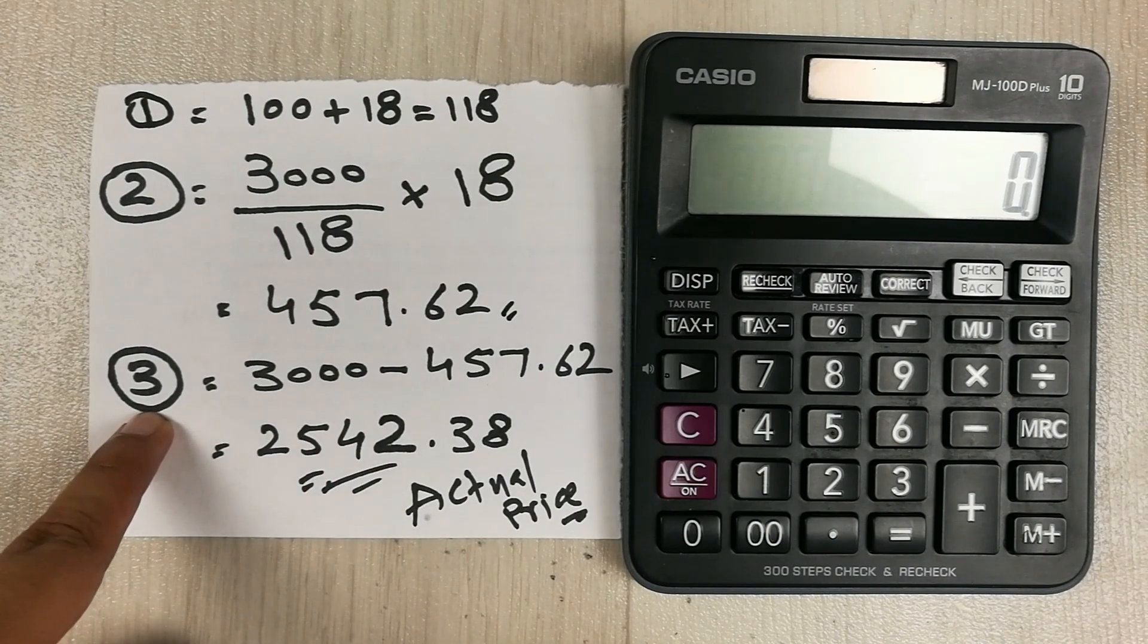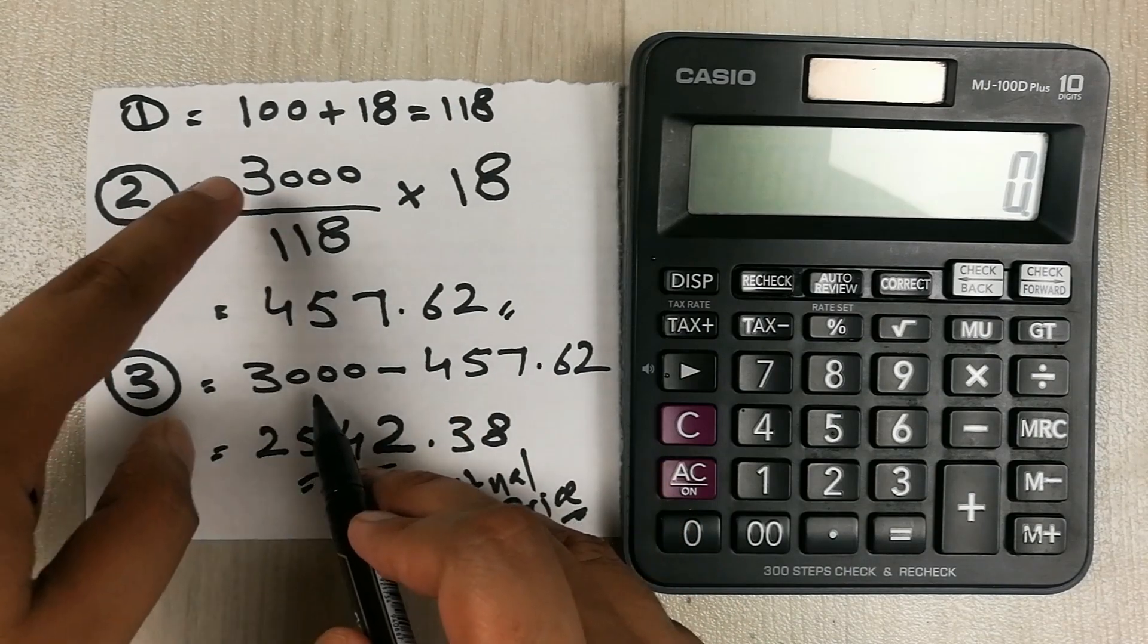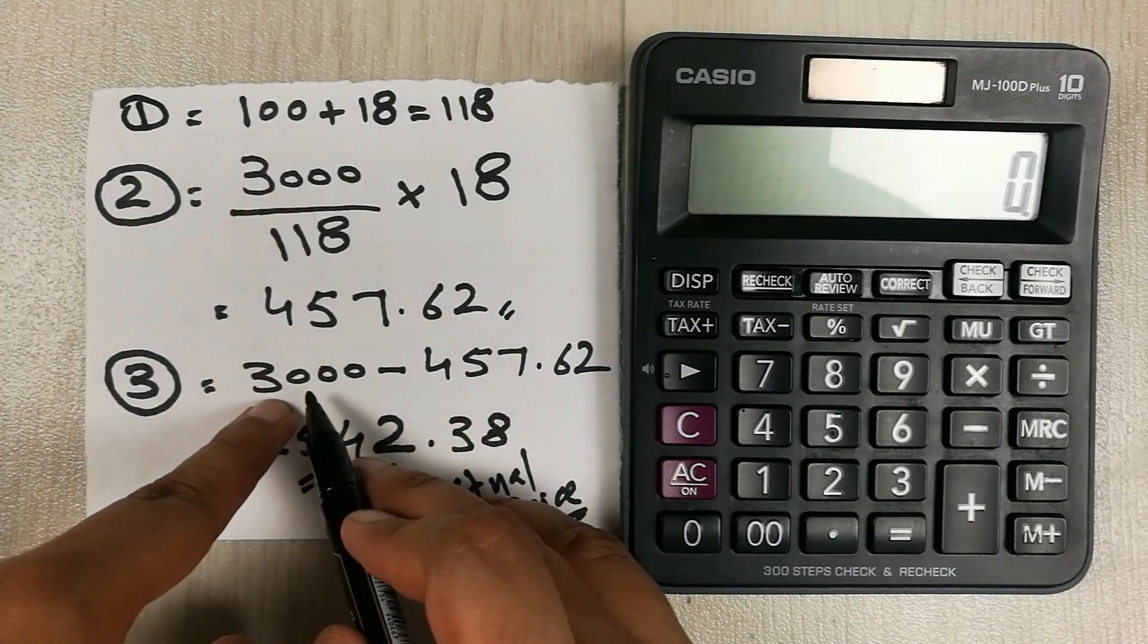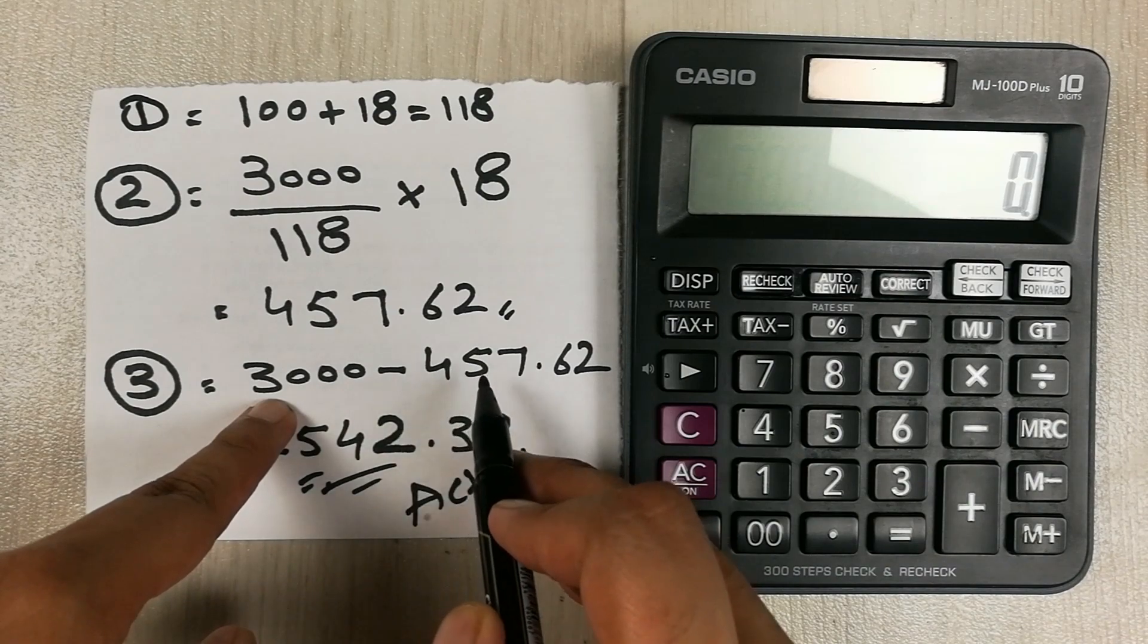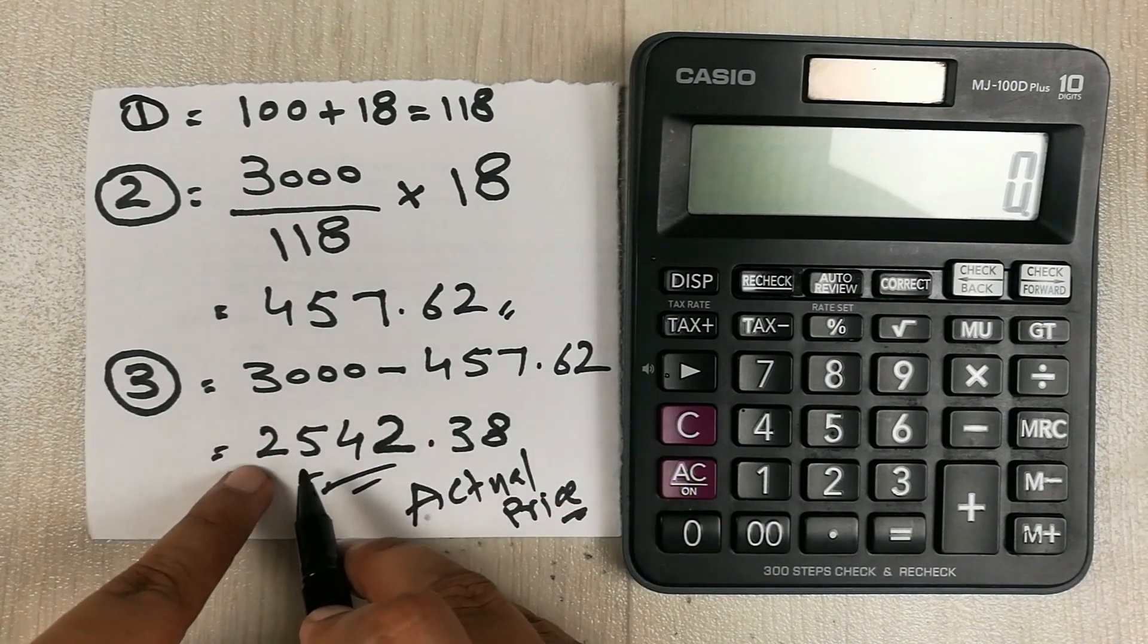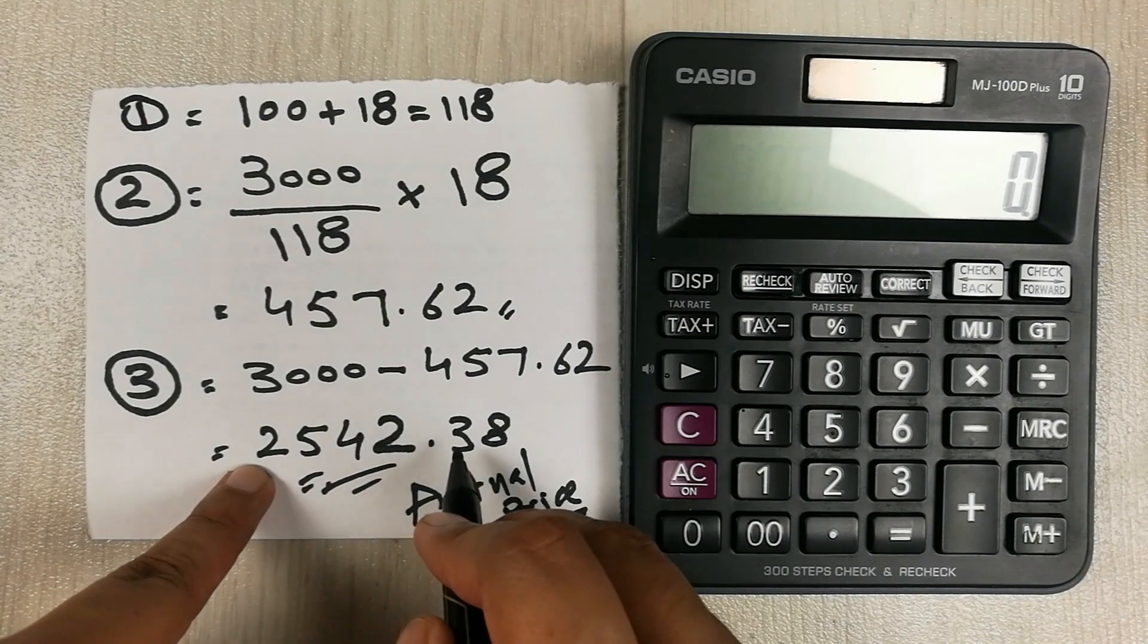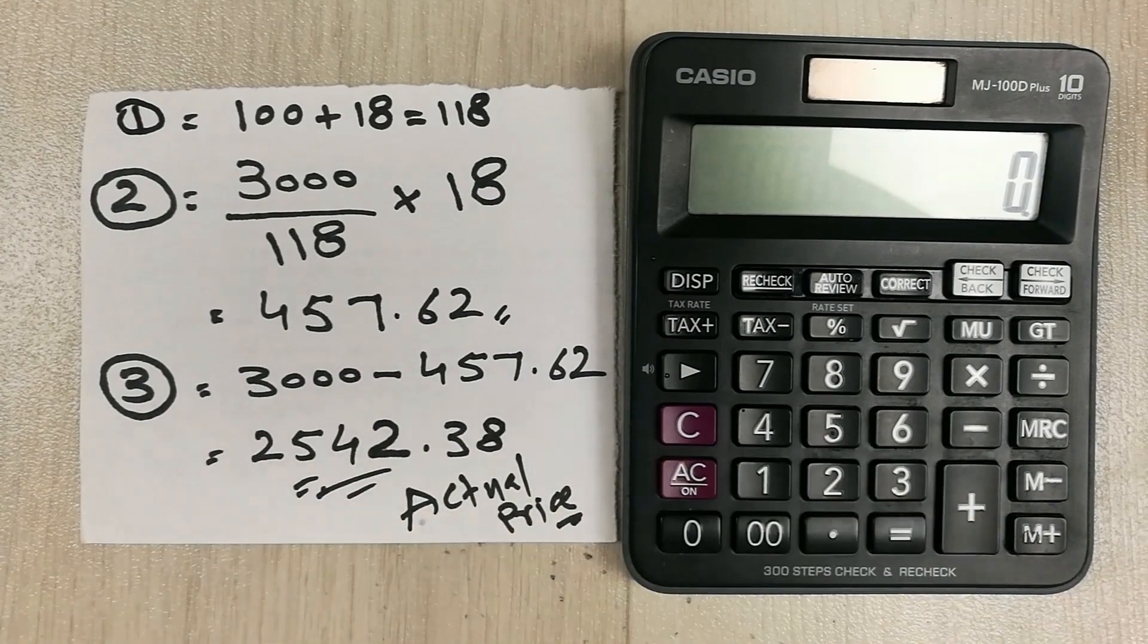Now in the third step which is the last step, we subtract this 457 with the price which was 3000. So we write here 3000 minus 457.62. When we subtract it, here is our answer which is 2542.38. So guys, this is our actual price.